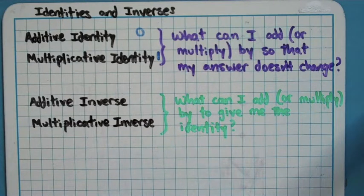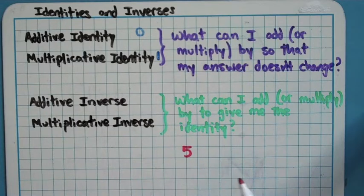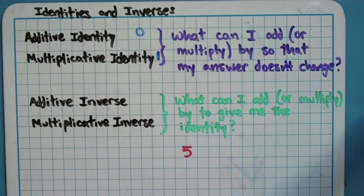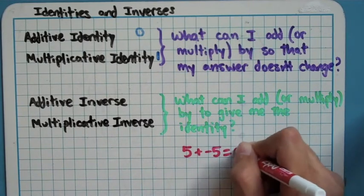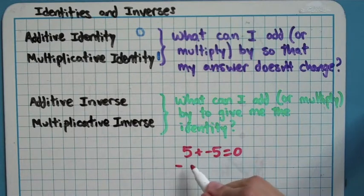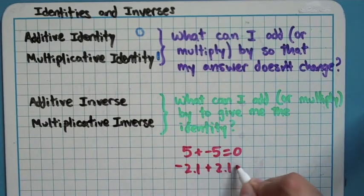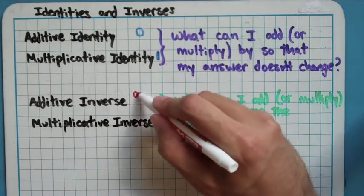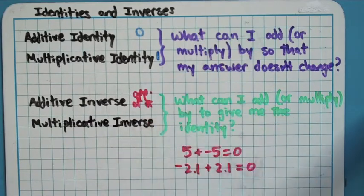Taking my example of 5 again. What can I add to 5, so that I get the identity for adding which was 0? So, what will cancel out that 5, basically? Turns out, if you add a negative 5, you get 0. If I started out with a negative 2.1, I'd have to add a positive 2.1 to get 0. So, the additive inverse is just the opposite of your number. The opposite of whatever you started with.